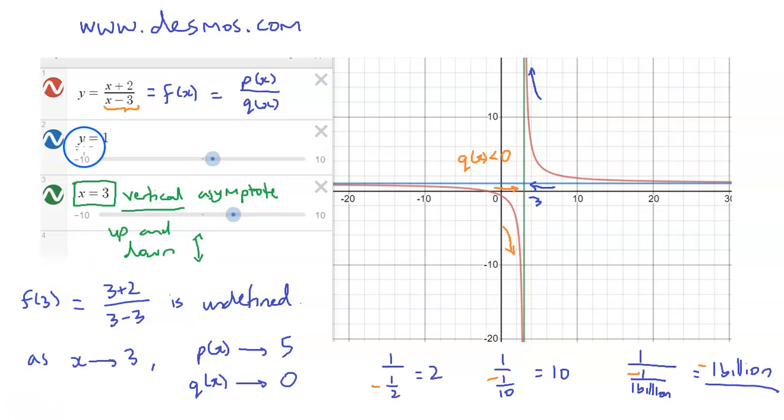Meanwhile, on the other side, for y equals 1, we see that it's actually impossible to get y equals 1 out of this function. So all other values of y are possible, but not y equals 1.